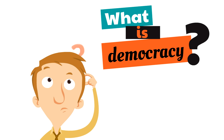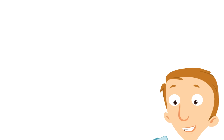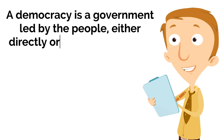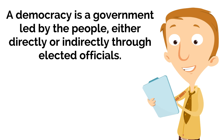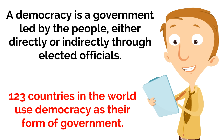A democracy is a government led by the people, either directly or indirectly through elected officials. It is used all over the world today — in fact, 123 countries in the world use democracy as their form of government, and it was born in ancient Greece.